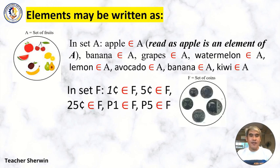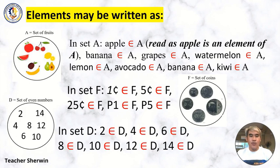In set F: 1¢ ∈ F, 5¢ ∈ F, 25¢ ∈ F, P1 ∈ F, P5 ∈ F. And in set D: 2 ∈ D, 4 ∈ D, 6 ∈ D, 8 ∈ D, 10 ∈ D, 12 ∈ D, and lastly 14 ∈ D. This is how element is written.